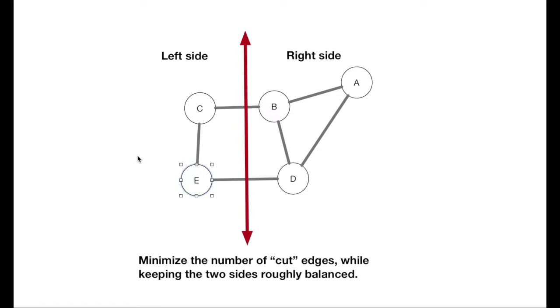For something this small with only 5 vertices, there's only 32 combinations. We could work through all of them, find the best one, but as the graph gets larger, you can't do brute force anymore, and you have to have some sort of other method. This is an NP-complete problem, so there are no known polynomial time algorithms, but there are some good heuristics, and Kernighan-Lin is one of them.